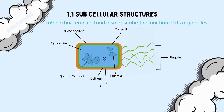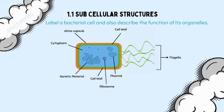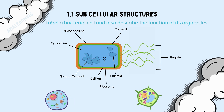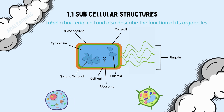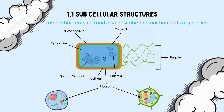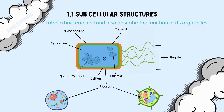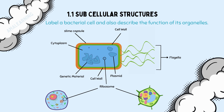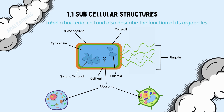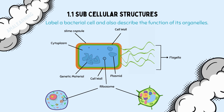The ribosome is where protein synthesis occurs. Animal cells and plant cells, which are eukaryotic cells, also have ribosomes. However, it is important to remember that the bacterial ribosome, although it has the same function, is much smaller.